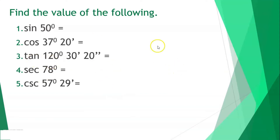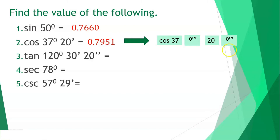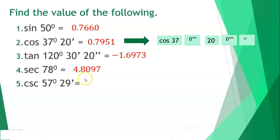Find the trigonometric values of the following using a calculator. Sine 50° ≈ 0.7660. Cosine 37°20' ≈ 0.7951 — to input this, press cosine 37, then the degree-minute-second key, then 20, then degree-minute-second, then equals. Tangent 120°30'20'' ≈ −1.6973. Secant 78° ≈ 4.8097.